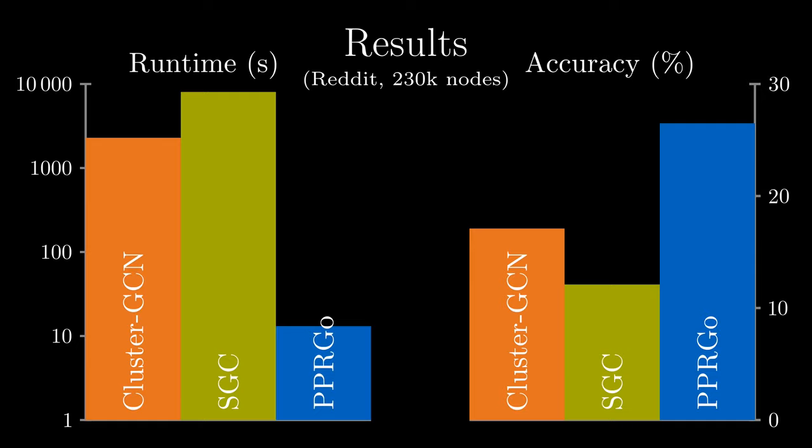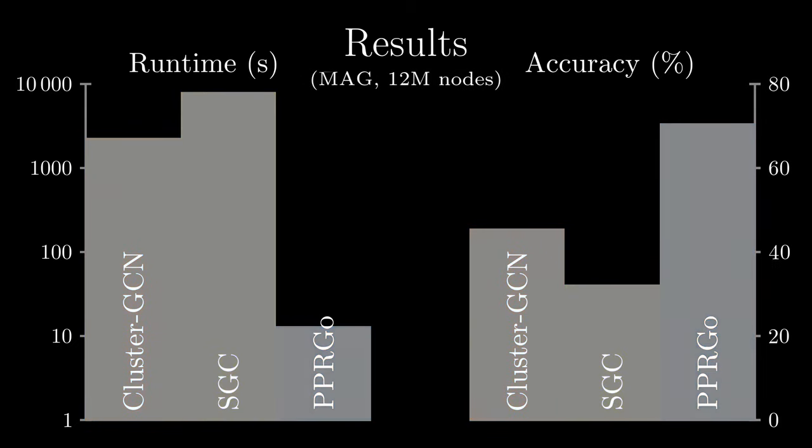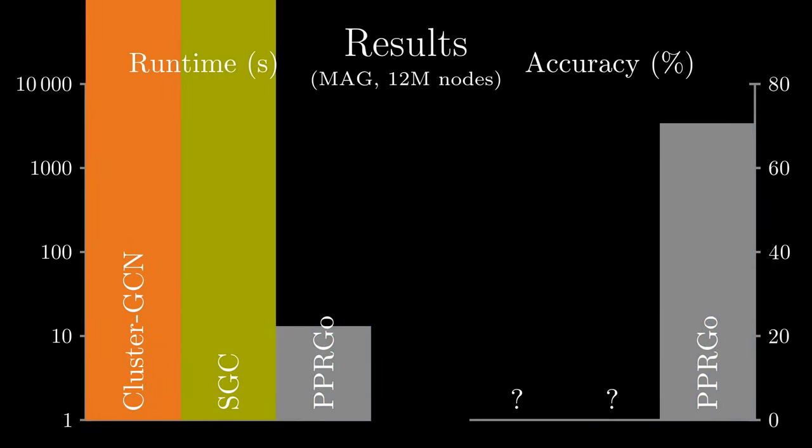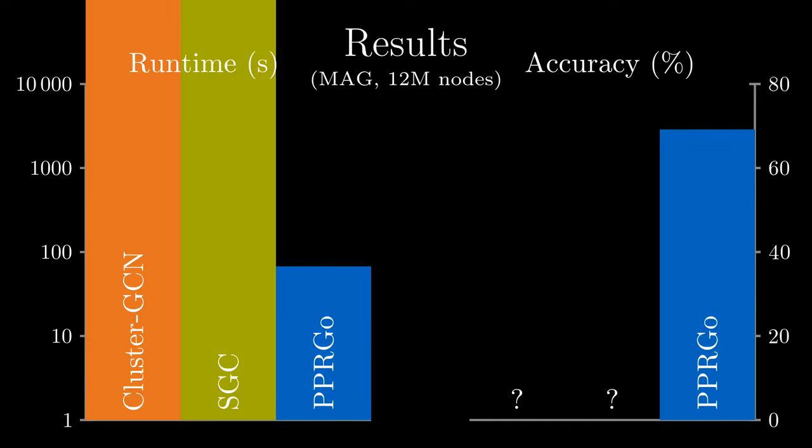The difference only grows further with larger datasets. For example, on our new MAG dataset, ClusterGCN and SGC take more than 24 hours, while PPR-GO with sparse inference finishes in one minute.